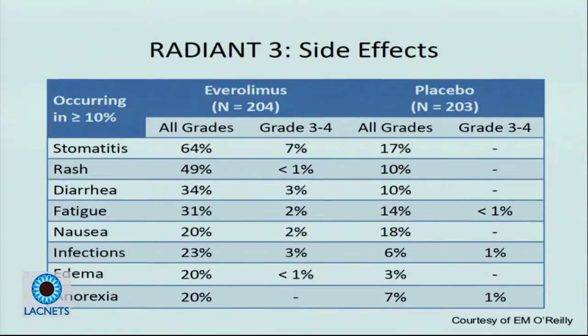The primary side effects with everolimus in RADIANT-3 are stomatitis or mouth sores, rash, and diarrhea — which patients on this medication know well. Other side effects include infections. Results are always broken down into all-grade events, which are higher, as well as grade 3 toxicities — the significant ones that land you in the hospital.